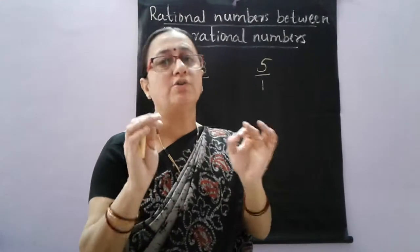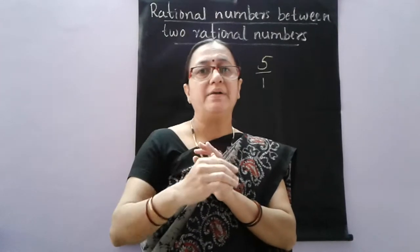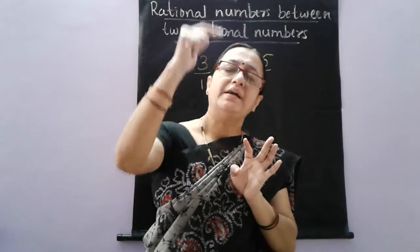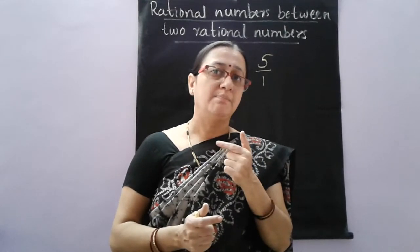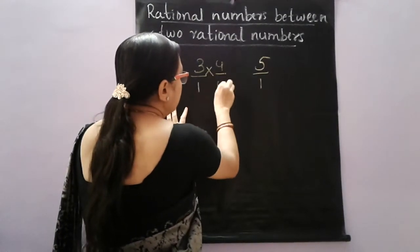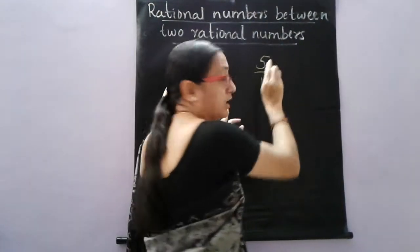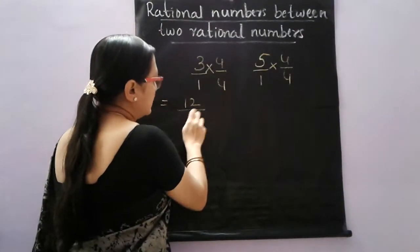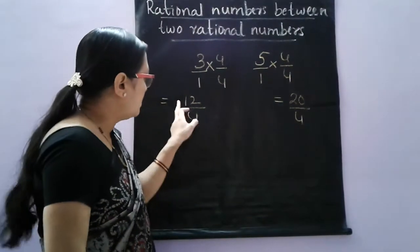Please follow this rule: if I want to find 3 rational numbers between any two rational numbers, multiply numerator and denominator by n plus 1, that is by 4 and 4. If I want to find 6 rational numbers, multiply by 7 and 7. If I want to find 20 rational numbers, multiply by 21 and 21. Here we want 3 rational numbers, so multiply both numerator and denominator by 4 and 4. We are finding equivalent rational numbers, like equivalent fractions — this also by 4 and 4.